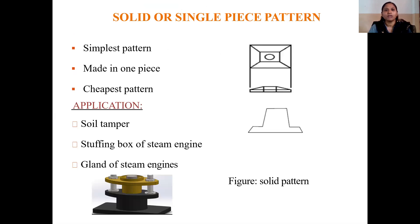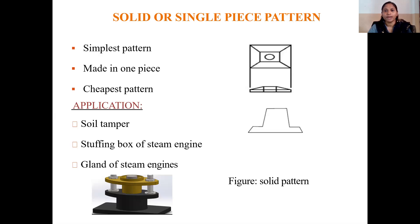Coming to the first pattern, which is named as solid pattern or single piece pattern — it is also called as one piece pattern. This solid pattern is used to produce a soil tamper.